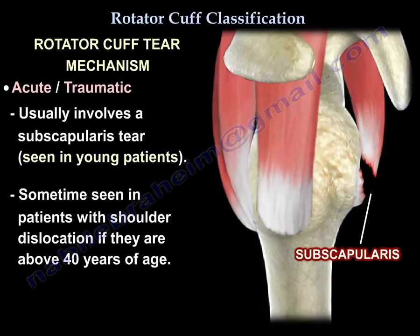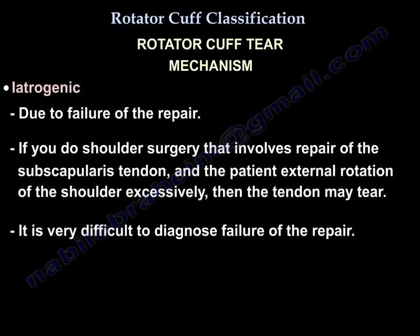Acute traumatic tears can also be seen in patients with shoulder dislocation if they are above the age of 40. Sometimes it is iatrogenic, due to failure of the repair — if the patient undergoes shoulder surgery involving repair of the subscapularis tendon and then performs excessive external rotation, they may tear that tendon, which is very difficult to diagnose.